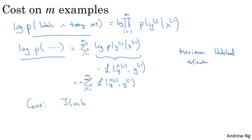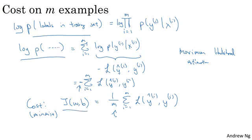So this justifies the cost we had for logistic regression, which was J of wb. And because we now want to minimize the cost instead of maximize the likelihood, we've gotten rid of the minus sign. And then finally for convenience, so to make sure that our quantities are better scaled, we just add a 1 over m extra scaling factor there. But to summarize, by minimizing this cost function J of wb, we're really carrying out maximum likelihood estimation with the logistic regression model.